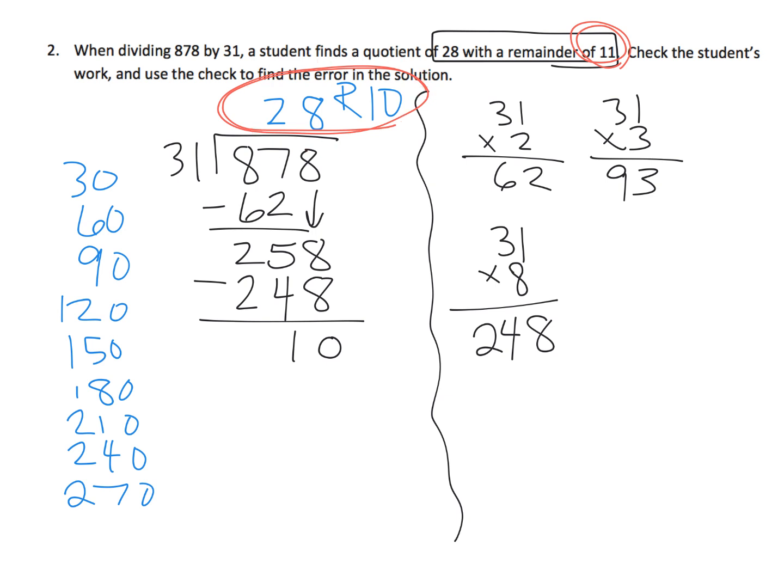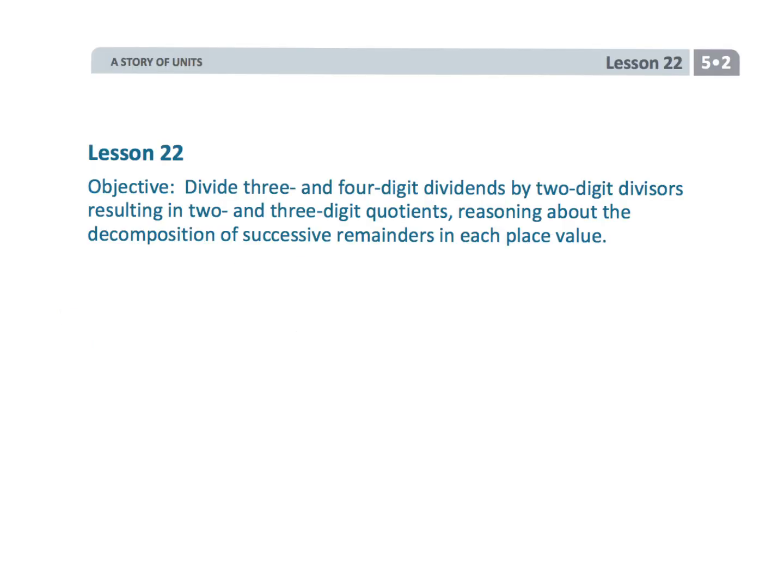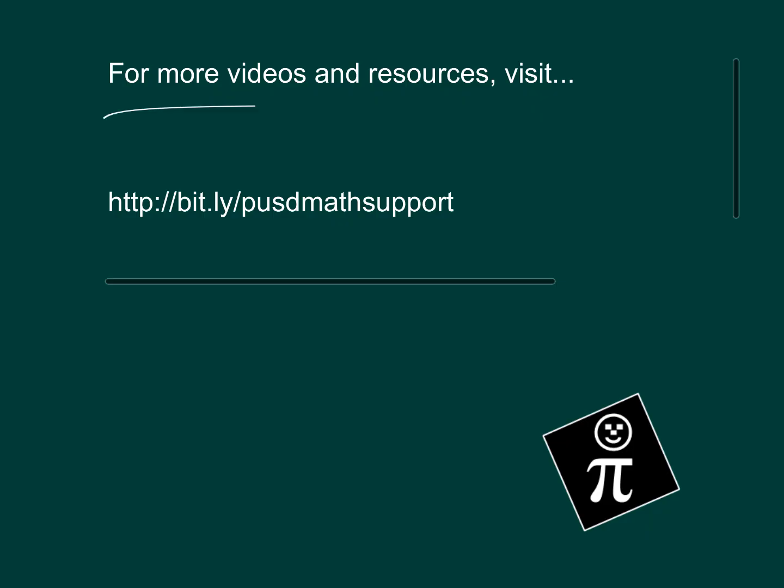Now technically, we should go over here and we should multiply and check our own work. And I'll do it in red. But technically, we should do 31 times 28. That's 31 times 28. Get the answer and then add in 10. I'm going to save that step for you teachers and parents. Let you work on that on your own. And that wraps up 5th grade module 2 lesson 22. Using that standard algorithm to divide and get 2 and 3 digit quotients.